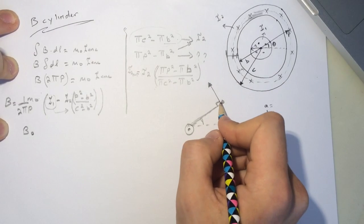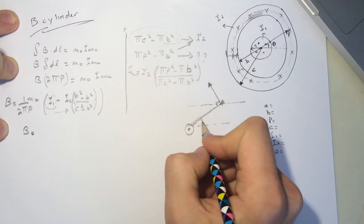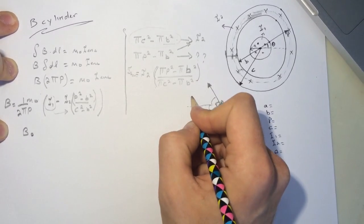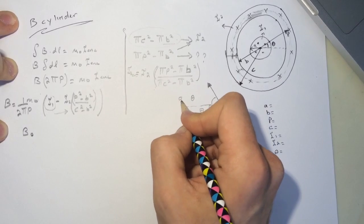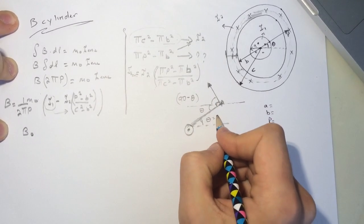So we want to find the x component of this. Let's draw one here. So if this is theta, this is also theta. So this guy is 90 minus theta. And for me it was 30 degrees.